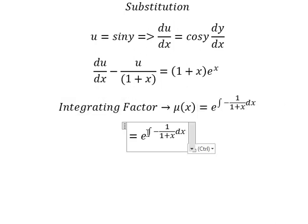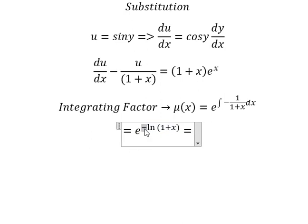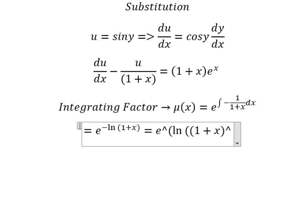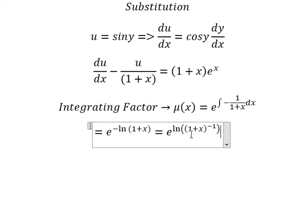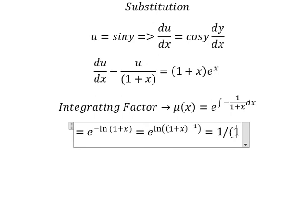The integral of this one, we have negative ln of 1 plus x. Later that, we put the negative inside the natural log. So we simplify and we get 1 over 1 plus x.